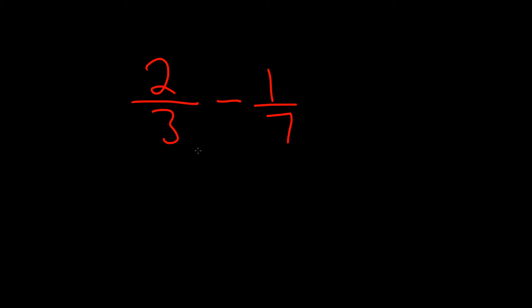So to find a common denominator, one thing that always works is you just take the denominator, which is the bottom part in each, so 3, and you multiply it by the other denominator, so 3 times 7. So 3 times 7 is 21.